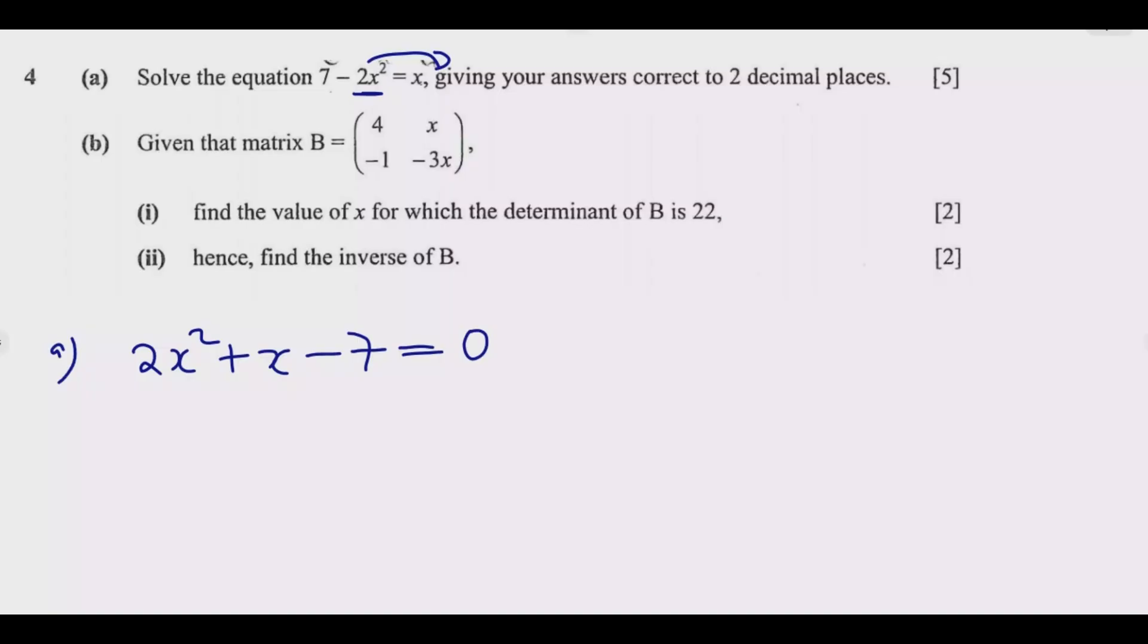This is the same as 0 equals this one because everything has gone to the other side. So this is the same as 2x squared plus x minus 7 equals 0. Once expressed in this form, you notice that this equation is a quadratic equation. Even before you express it, you notice that the highest power is a 2. If the highest power of a variable is a 2, it's a quadratic equation.